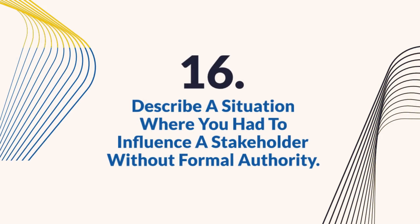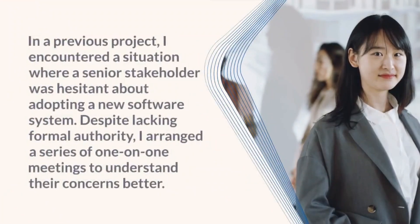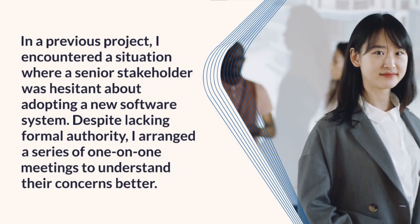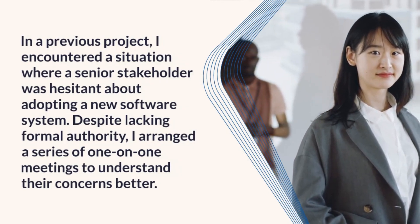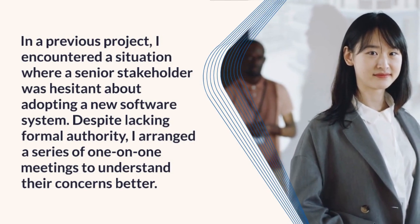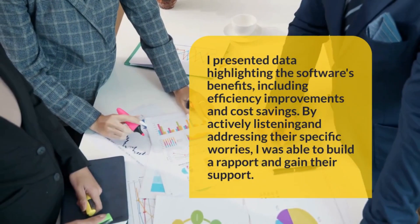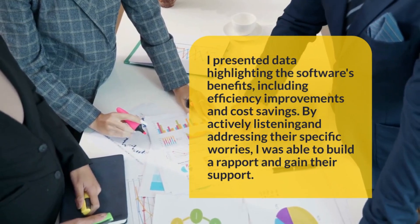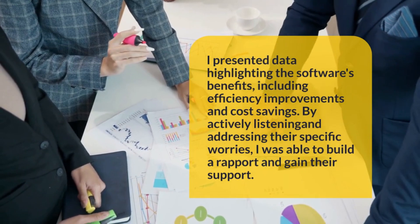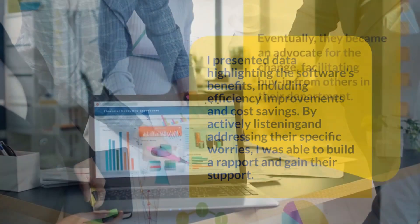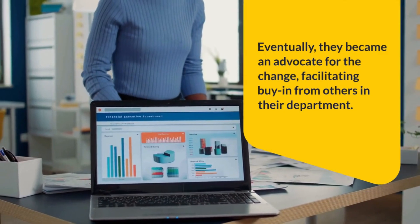Question 16: Describe a situation where you had to influence a stakeholder without formal authority. In a previous project, I encountered a situation where a senior stakeholder was hesitant about adopting a new software system. Despite lacking formal authority, I arranged a series of one-on-one meetings to understand their concerns better. I presented data highlighting the software's benefits, including efficiency improvements and cost savings. By actively listening and addressing their specific worries, I was able to build rapport and gain their support. Eventually, they became an advocate for the change, facilitating buy-in from others in their department.